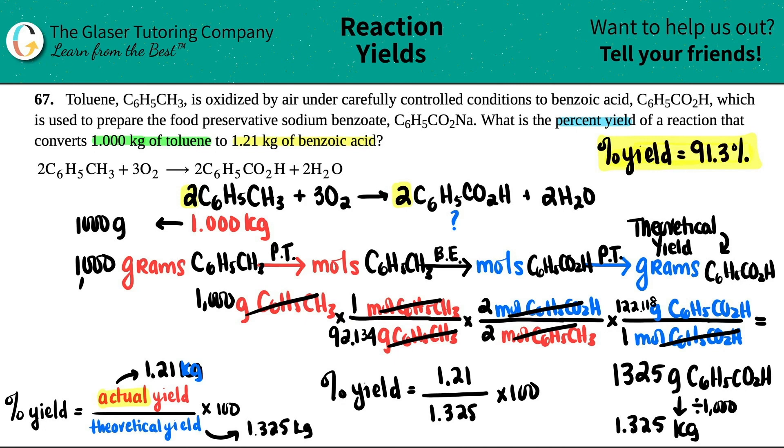Now, if you want to still keep the kilograms here for the actual yield, the theoretical yield also has to be in kilograms. So you can convert this into kilograms by dividing by 1,000. So this would be 1.325 kilograms. And that's the number that would go in this equation. We're still wanting to find the percent yield.